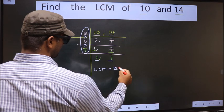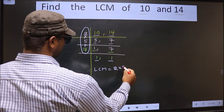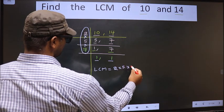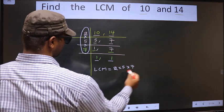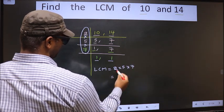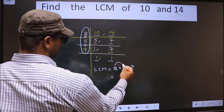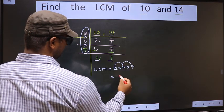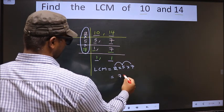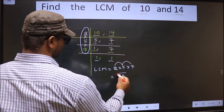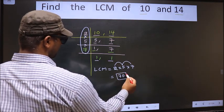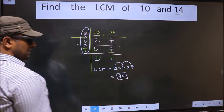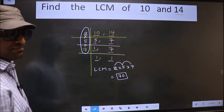That is 2 into 5 into 7. That is 2 into 5 = 10, into 7 = 70. So 70 is our LCM.